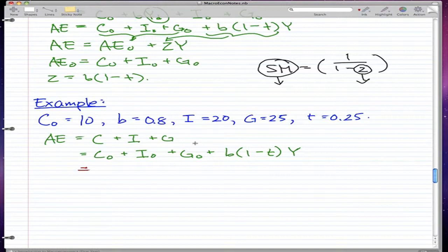Government spending or GO or G is 25, and T is 0.25. And remember, T is how much we get taxed.